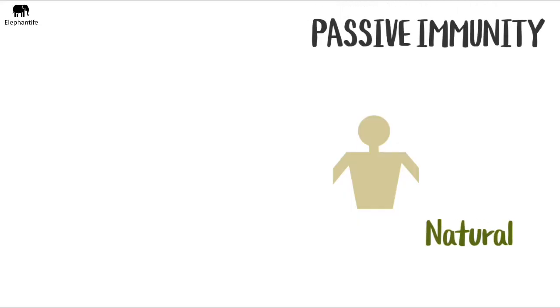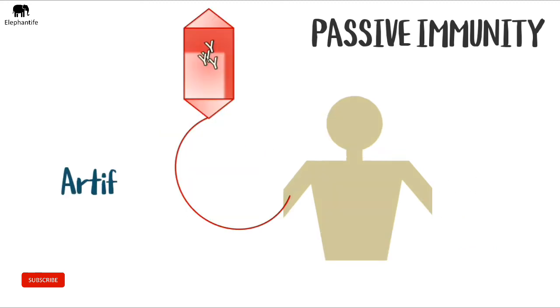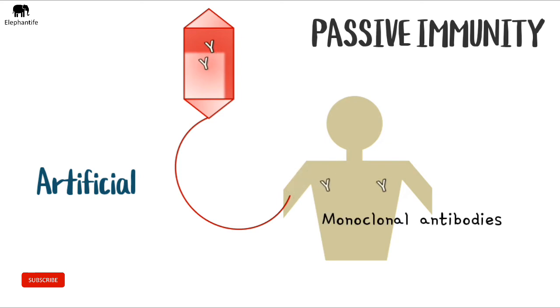When our immune system receives ready-made antibodies, we gain passive immunity. It can come from another person's antibodies — for example, we get some antibodies from our mother, which is natural passive immunity. When artificially produced antibodies are injected into a person, they gain passive immunity. For instance, monoclonal antibodies are injected to treat rheumatoid arthritis — this is artificial passive immunity.